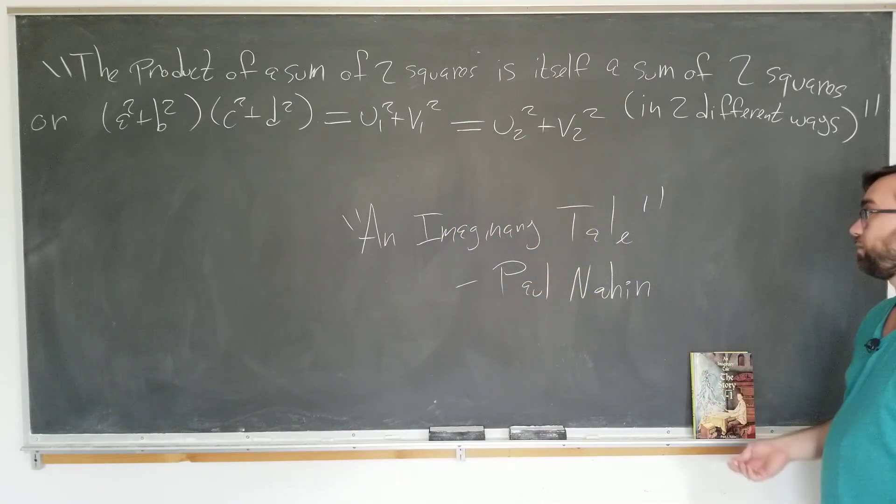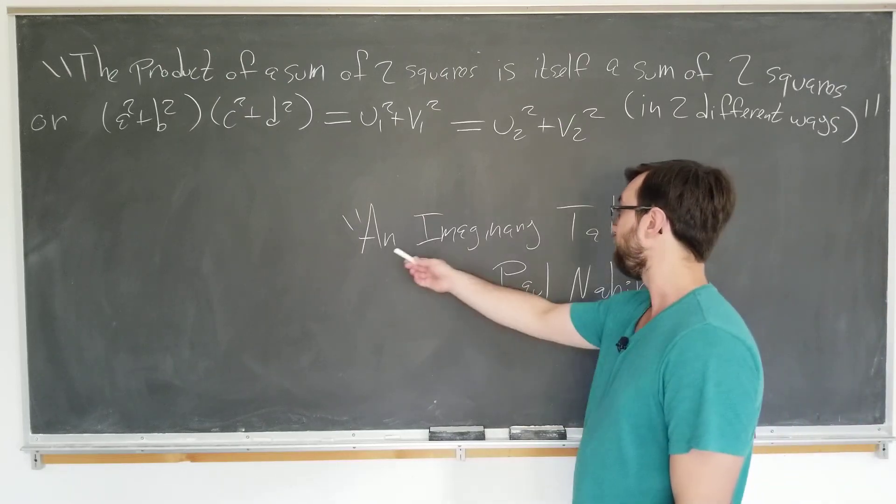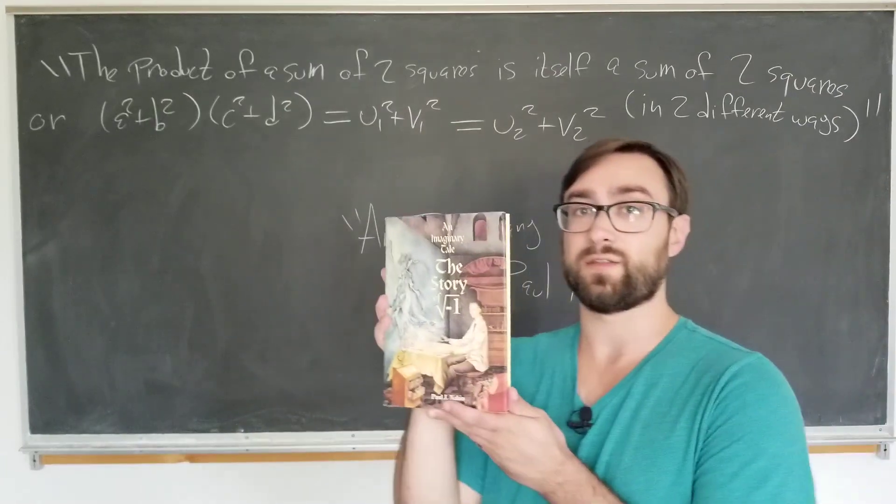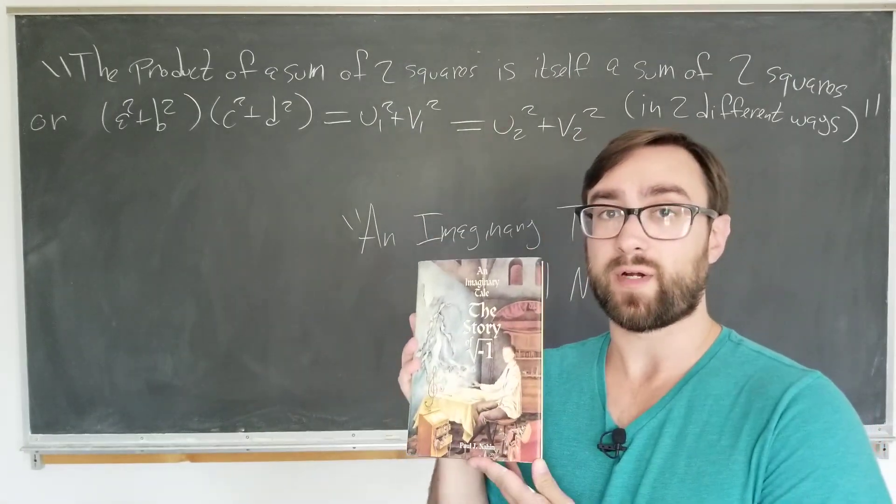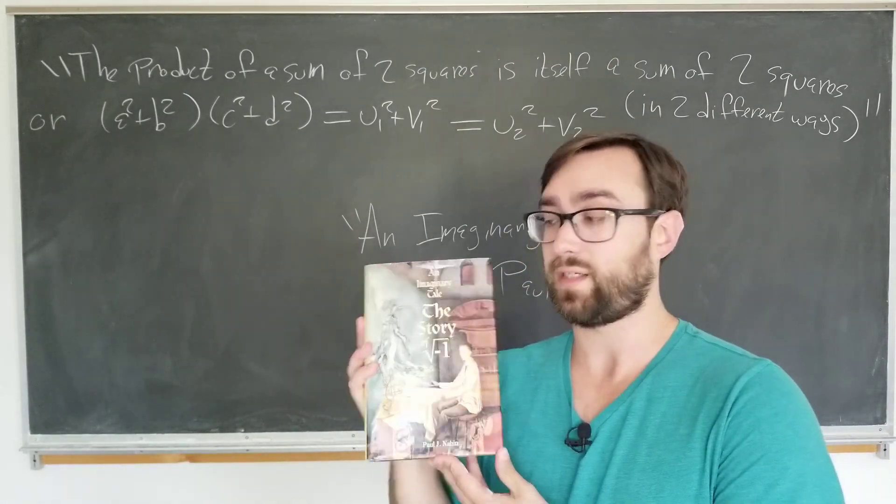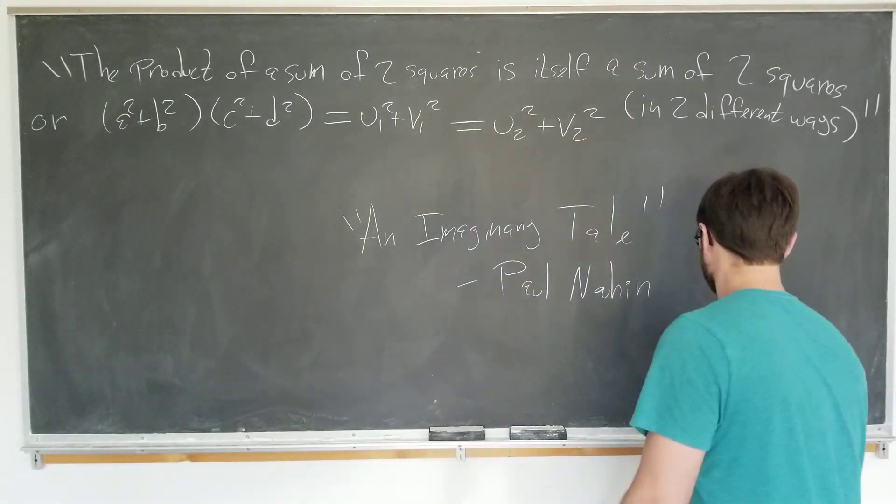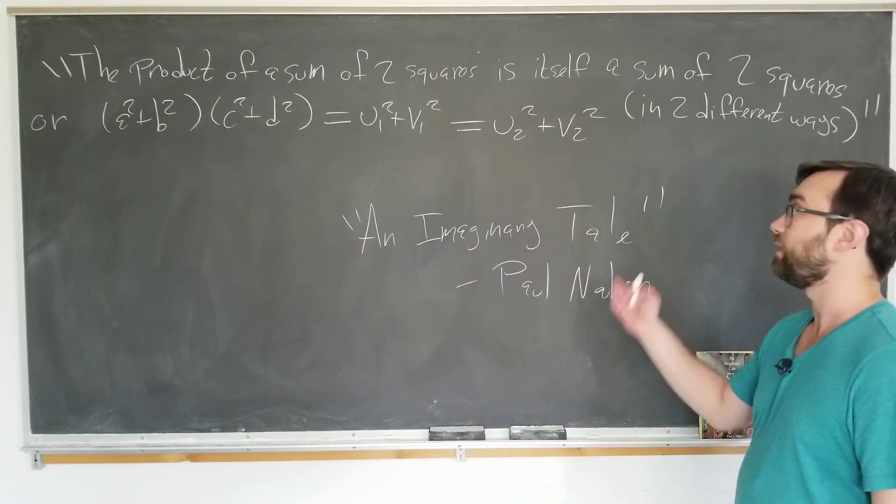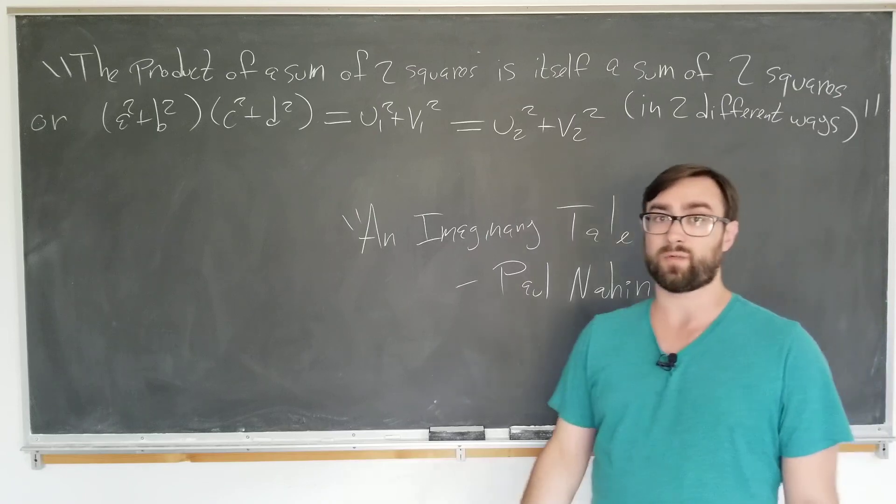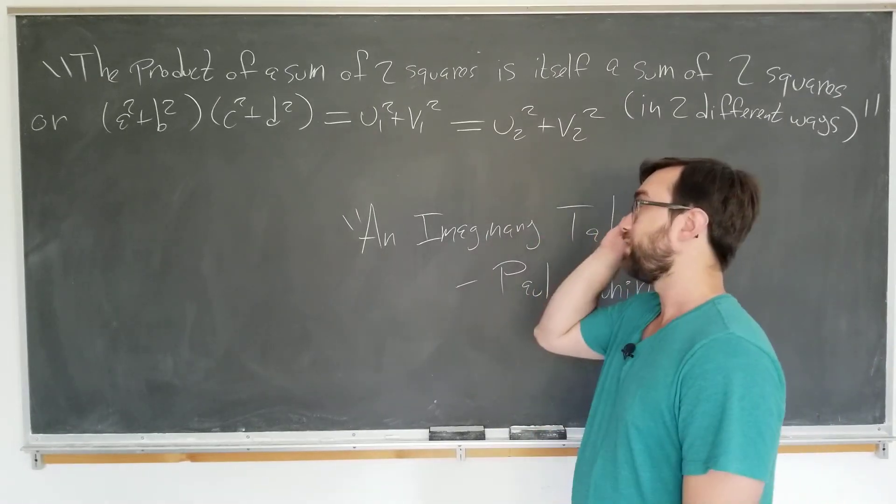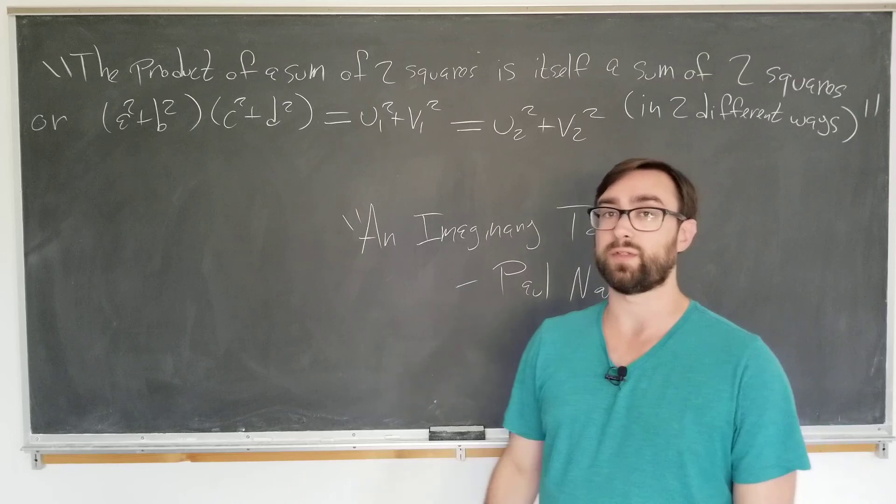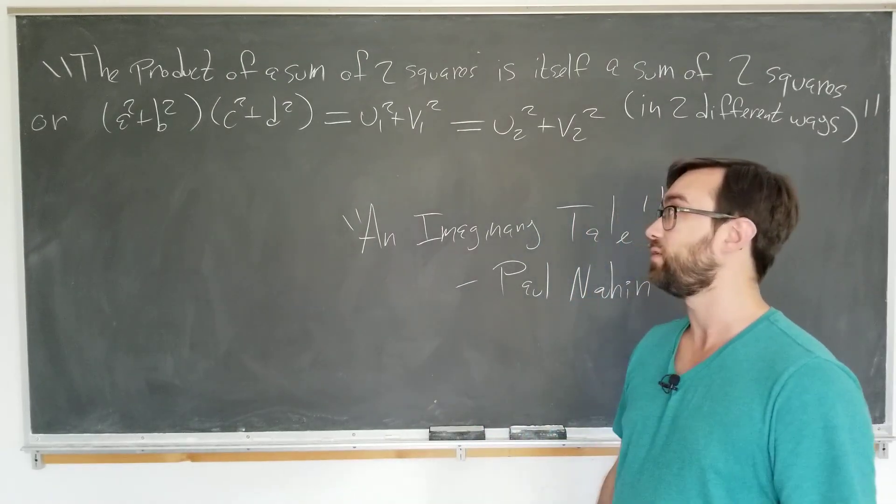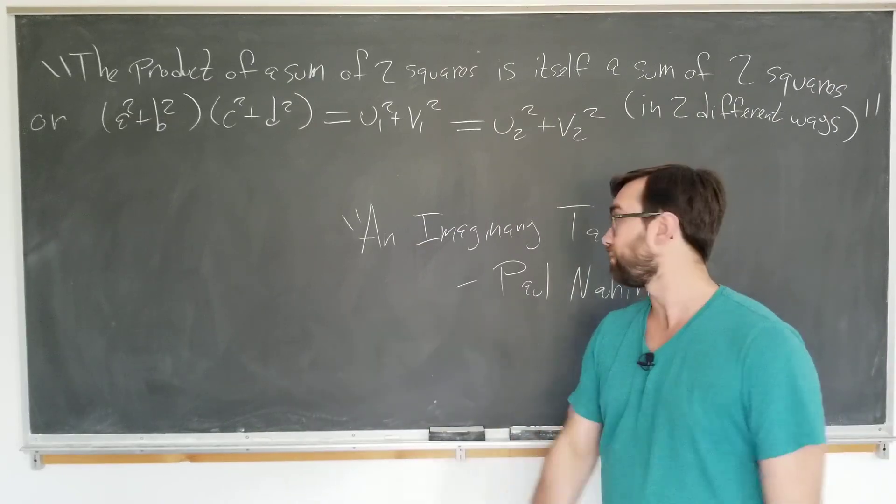This example comes to us from a fantastic book, An Imaginary Tale by Paul Nahin. It tells you many elementary properties of complex numbers. We're going to start off with a few simple examples in terms of numbers before we go through the straightforward proof. The gist of what we're going to do today is that this seems like a pretty hard theorem to prove using only real methods, and it's actually far easier and faster to use complex methods to do it.